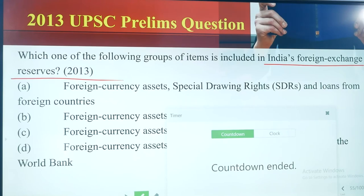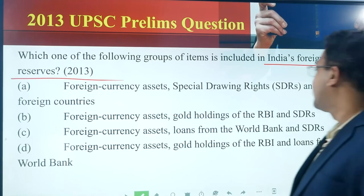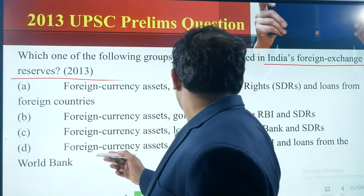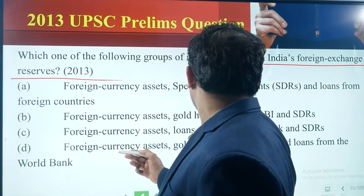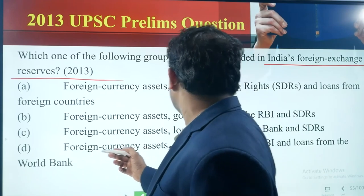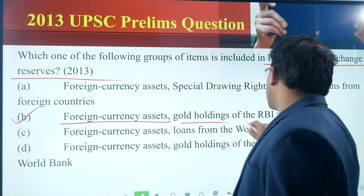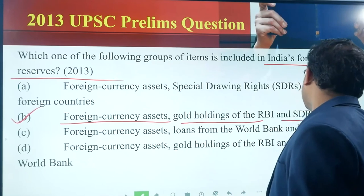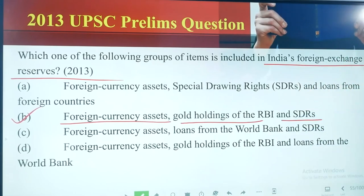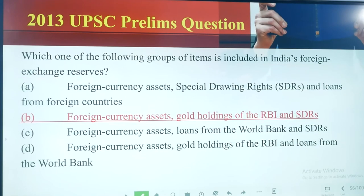I am straightforwardly giving the answer. The answer is option B: foreign currency assets, gold holdings of the RBI, and SDR. This is the answer — foreign currency assets, gold holdings of the RBI, and SDR.